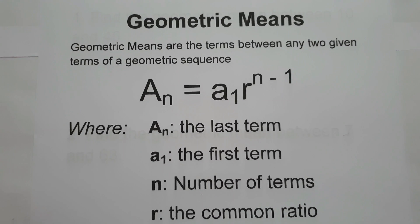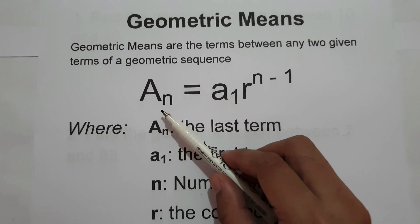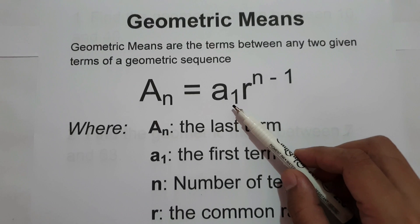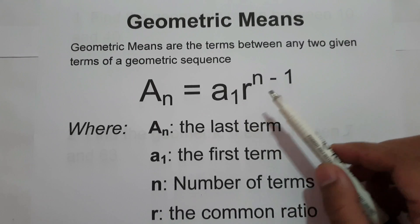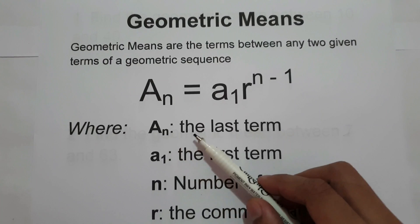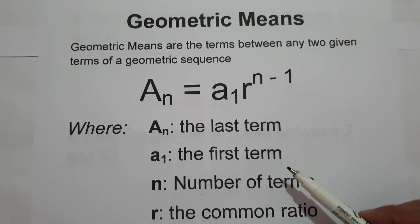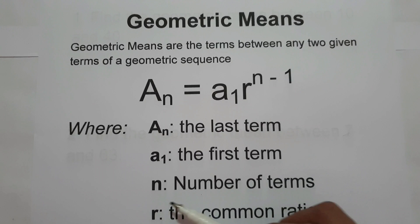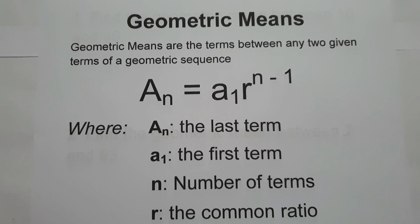In order for us to understand what geometric means are, we have to familiarize ourselves with the formula of geometric sequence. That is a_n equals a_1 multiplied by r raised to n minus 1, where a_n is the last term, a_1 is the first term of the sequence, n is the number of terms, and r is the common ratio.